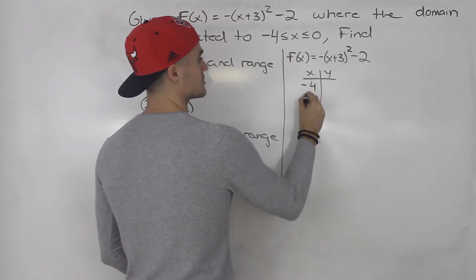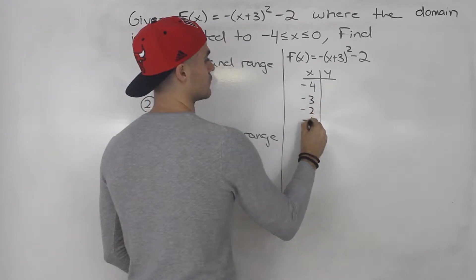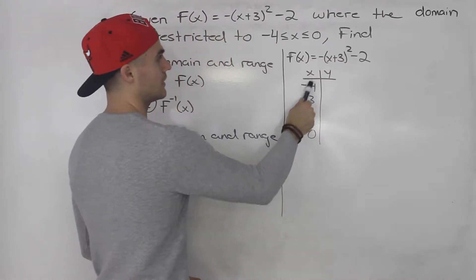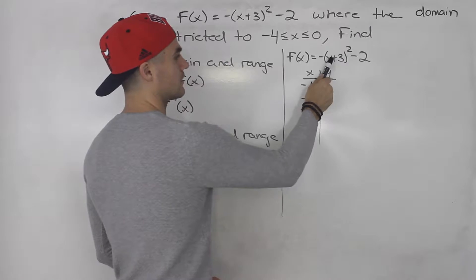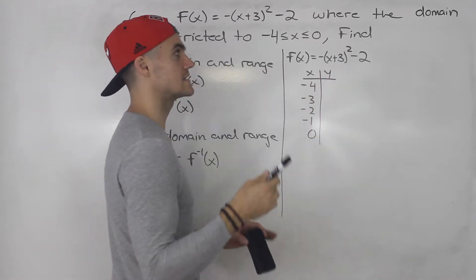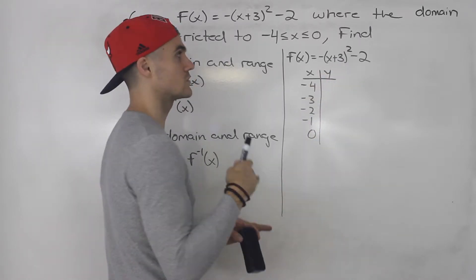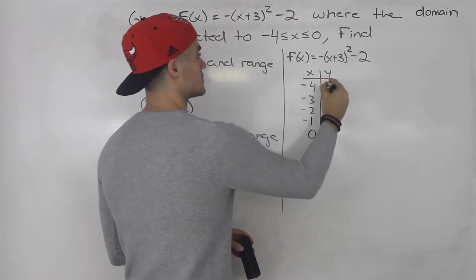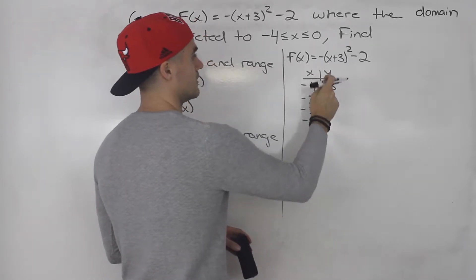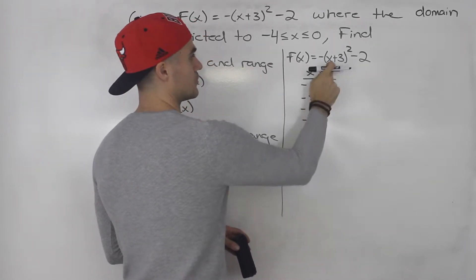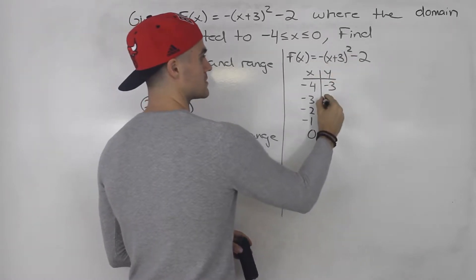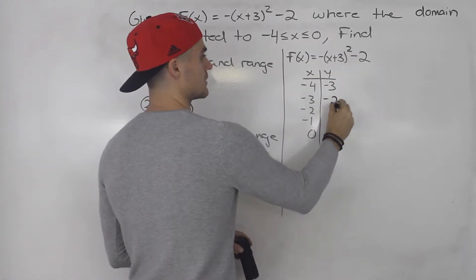So we have x values: negative 4, negative 3, negative 2, negative 1, and then 0. Plugging in negative 4: negative 4 plus 3 is negative 1, negative 1 squared is 1, times negative 1 is negative 1, minus 2 gives us negative 3. If we plug in negative 3 for x, we'd have 0 squared, so this whole thing would be 0 minus 2, giving negative 2.